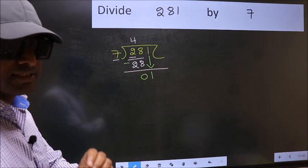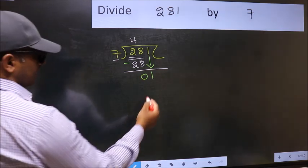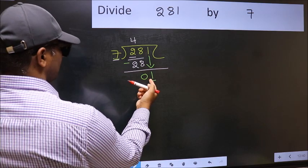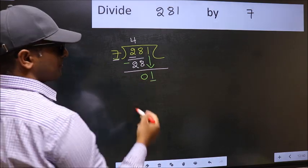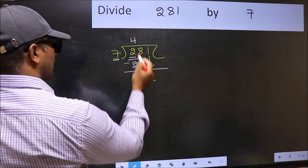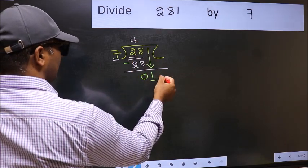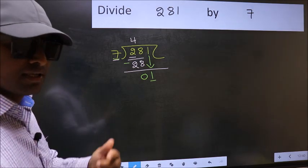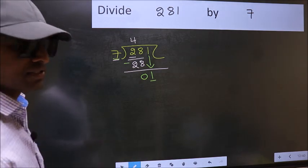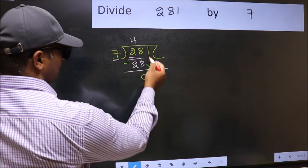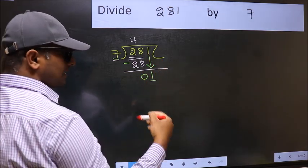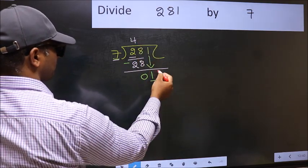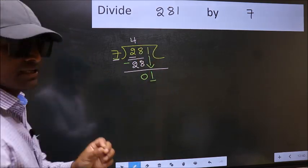And the mistake is this. Here we have 1 and here 7. 1 is smaller than 7. So what many do is, they directly put dot and take 0. Which is wrong. Why is it wrong? Because just now you brought this number down, and in the same step, you want to put dot and take 0. Which is wrong.